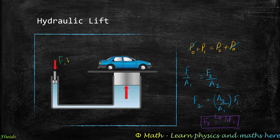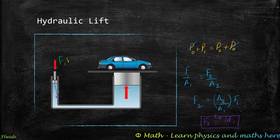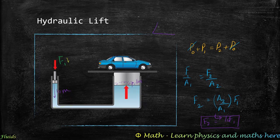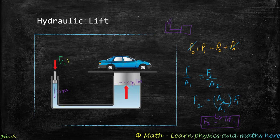This might seem like a violation of conservation of energy, but the trade-off is in displacement: if you push the small piston down 10 meters, the large piston only rises 1 meter. This is exactly what you see in car jacks — you pump repeatedly to raise the car a small amount, because each push moves the large piston only a little.